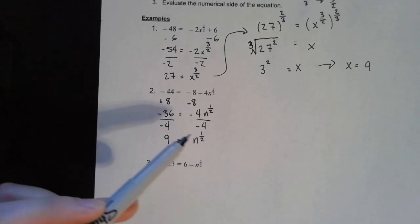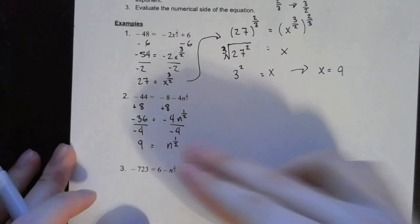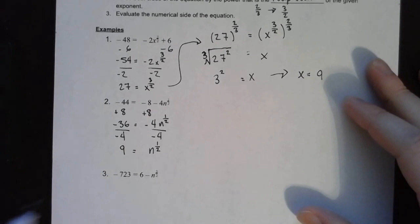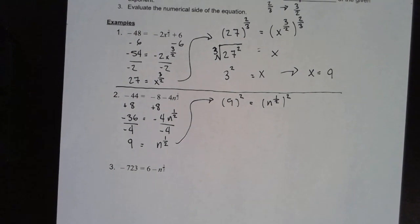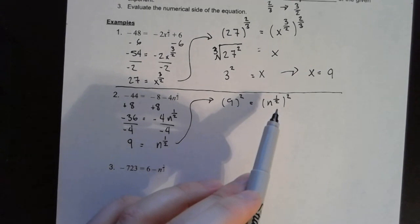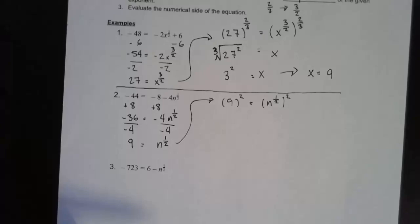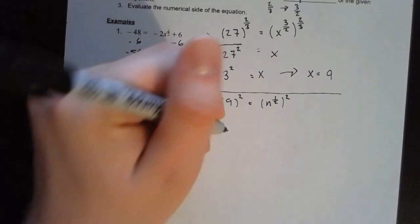To get rid of this 1 half, I need to raise both sides to the reciprocal of 1 half. If I inverse this fraction I get 2 over 1, which is 2. So I'm going to raise both sides to the second power. I have 9 squared equals n to the 1 half power to the second power. These exponents are going to cancel each other out — that is why we set it up this way. We just need to determine what 9 squared is, which is 81. So the exponents cancel and n equals 81.